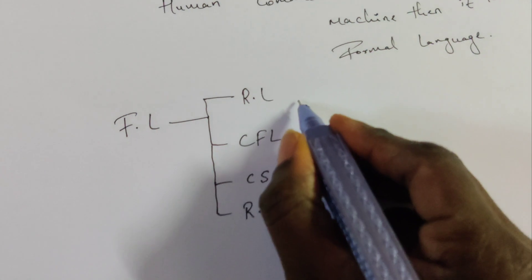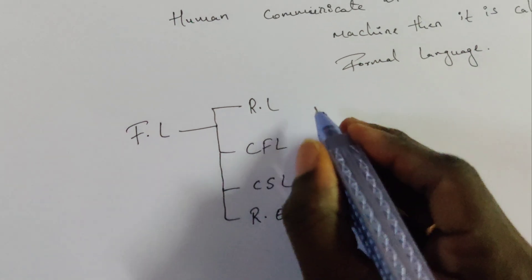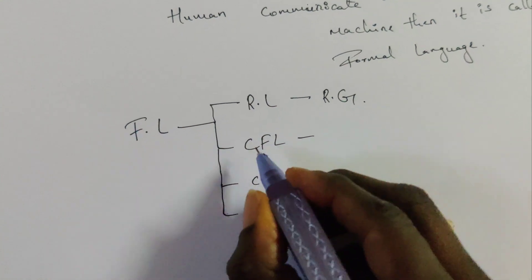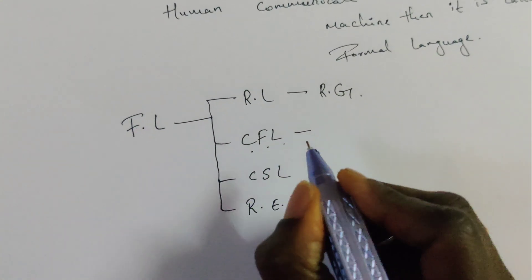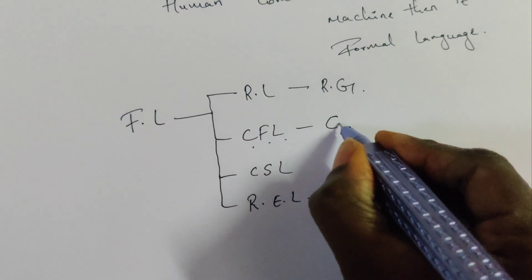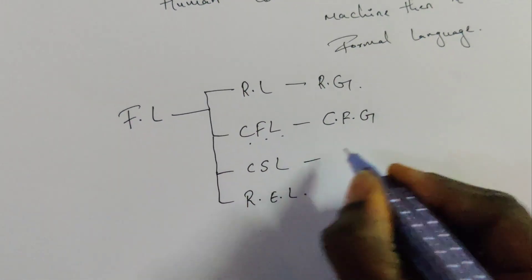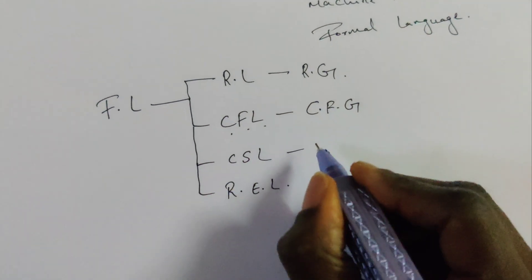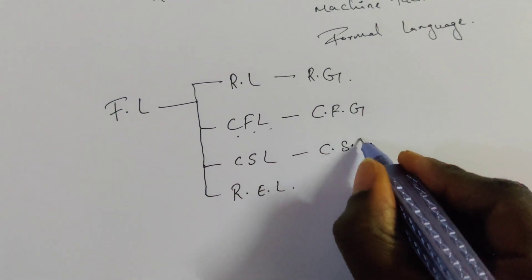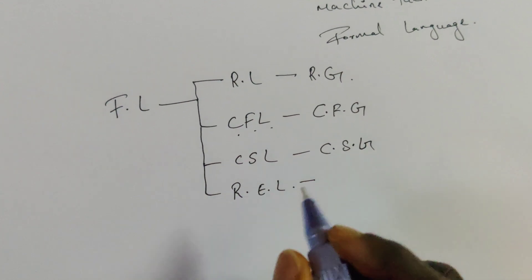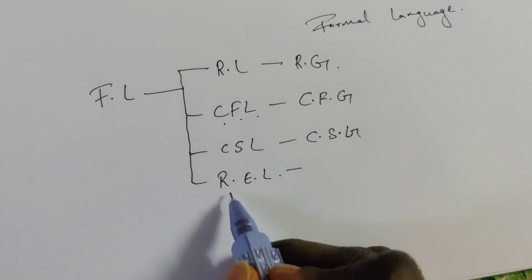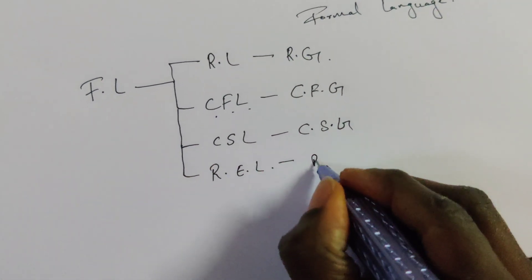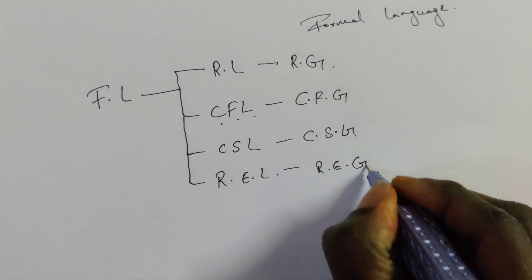The grammar which generates regular language is regular grammar. The grammar which generates context-free language is context-free grammar. The grammar which generates context-sensitive language is context-sensitive grammar. The grammar which generates recursively enumerable language is recursively enumerable grammar.